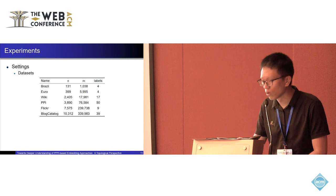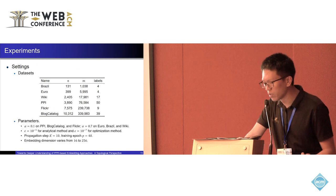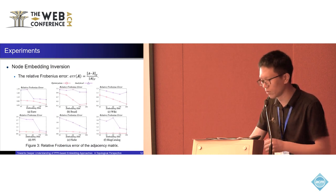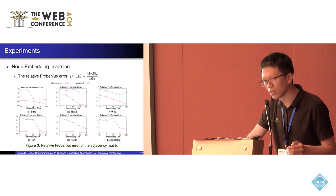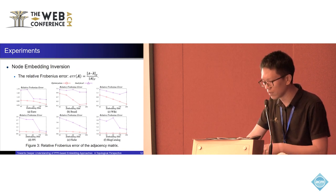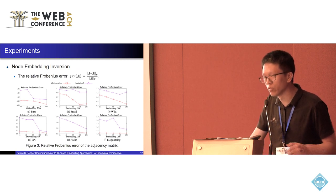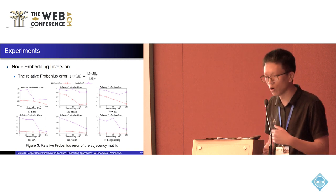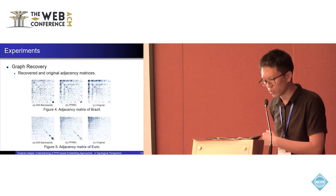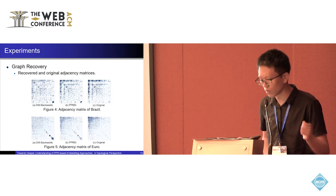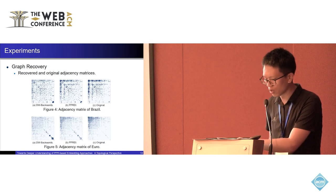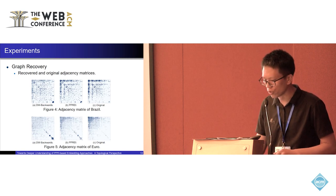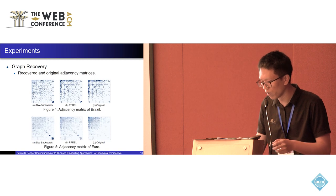We evaluate on six datasets. We first compare our two algorithms using the relative Frobenius error of the reconstructed adjacency matrix — lower is better. The optimization method achieves better results, so we report only the optimization method going forward. We also compare against a method called DW-Backwards, which reconstructs the graph from DeepWalk embeddings. Visualizing the adjacency matrices directly, the matrix reconstructed from PPR-based embeddings is more similar to the original one.